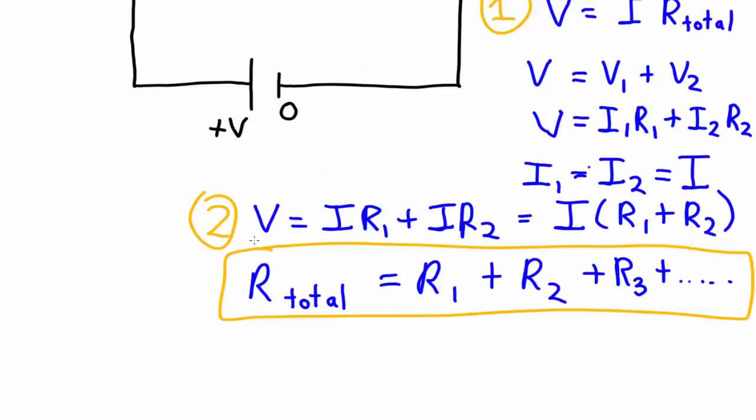So we've just derived a formula that allows us to determine the total resistance of any number of resistors in series. If we wanted to write this a little bit more rigorously we could write that the total resistance is equal to the sum of all the individual resistances.